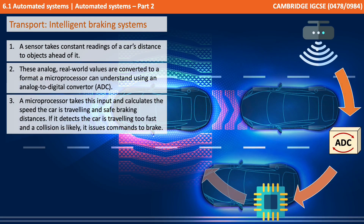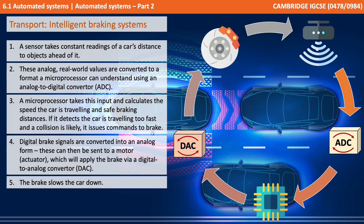For transport, let's look at intelligent braking systems, something we covered in one of our previous videos on sensors. A sensor takes constant readings of the car's distance to objects ahead of it. These analog real-world values are converted by the microprocessor into a digital signal. The microprocessor calculates the speed the car is traveling and the safe braking distance. If it detects the car is traveling too fast and a collision is likely, it issues a command to brake. Digital brake signals are then converted and sent to a motor and actuator which apply the brake via a digital-to-analog converter, physically slowing the car down.